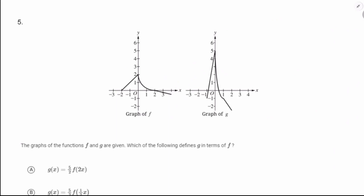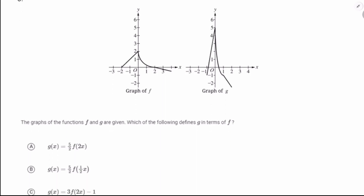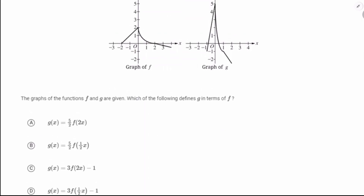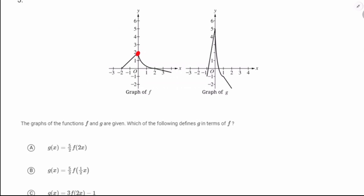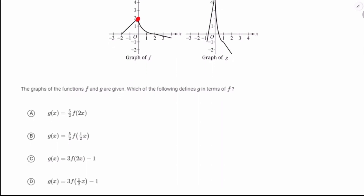This next one — I remember seeing this in AP Classroom and I didn't love it. Looking at the answer choices, it's going to be either two dilations or two dilations and a shift. The first thing I noticed is the top of the graph went from 2 up to 5 — that's probably a vertical dilation. I remember not liking this problem the first time I saw it. I'm not liking it much better now.